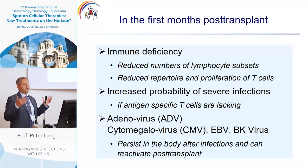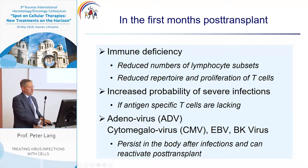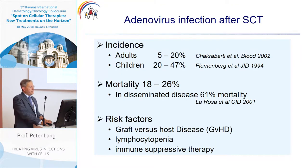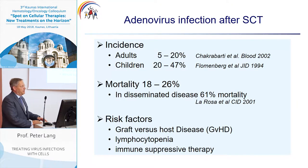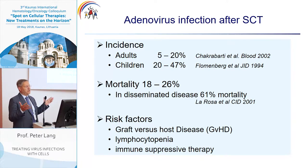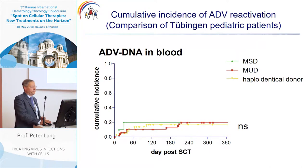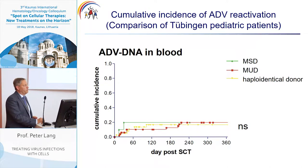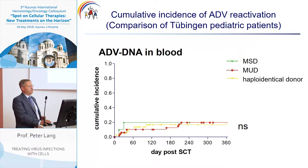Cytomegalovirus, especially in adults, but also EBV and BK virus — all these viruses can persist in the body. The incidence of ADV in adults is between 5 and 20 percent, in children between 20 and 47 percent. Mortality rates between 18 and 26 percent have been reported, and in disseminated disease up to 61 percent. Risk factors are well known: GVHD, lymphocytopenia, or immunosuppressive therapy.